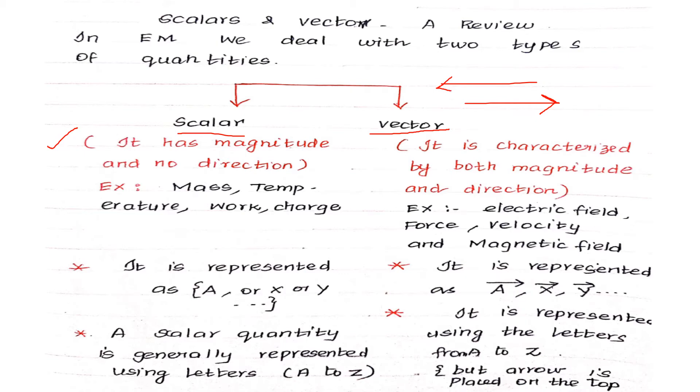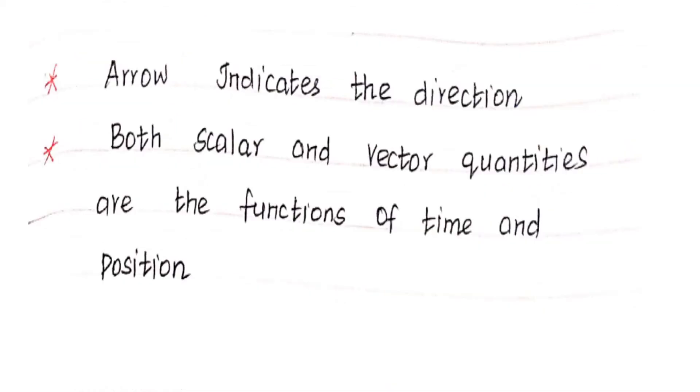And scalar, it is represented by any variable like a, x, y, z and so on. It is represented by the same x and y but only one different. In the top one arrow, it is there. Next, the scalar quantity is generally represented using the alphabets a to z. It is represented by using the letters from a to z but arrow is placed on the top. That is vector. Next, arrow indicates the direction. Both scalar and vector quantities are the function of time and position. This is also important.